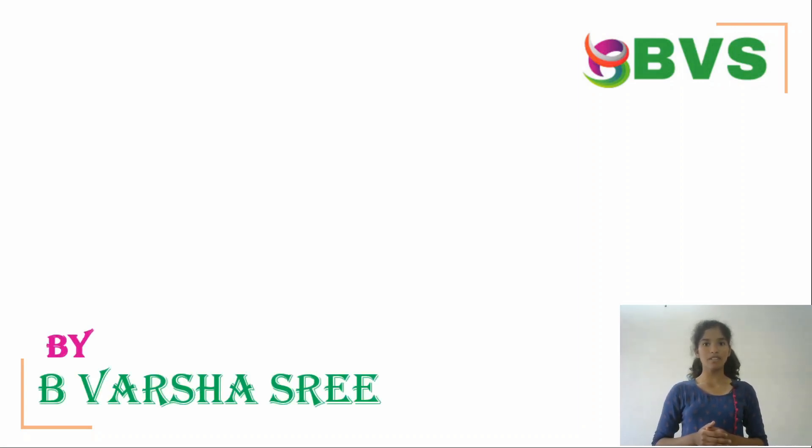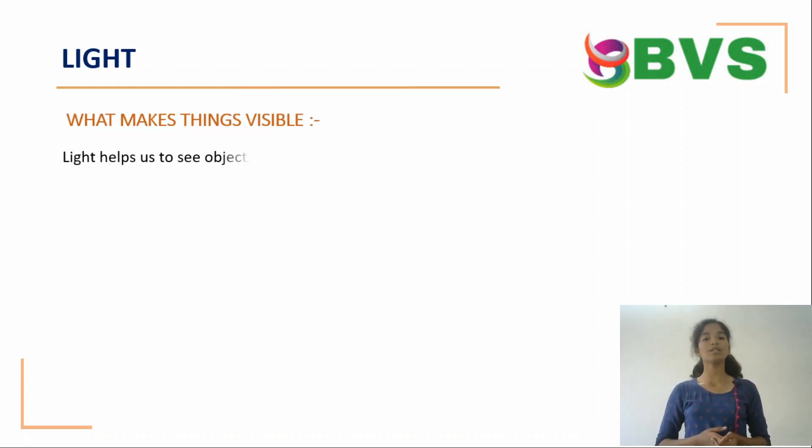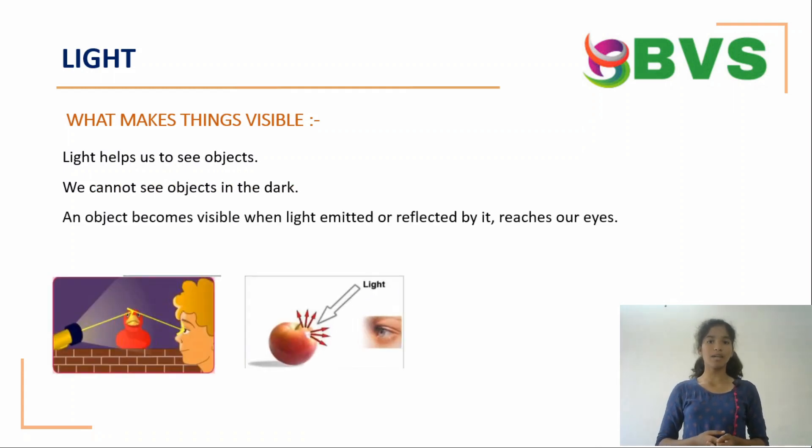Hi, my name is B. Varsushvi. Now, let us discuss about light. What makes things visible? Light helps us to see objects. We cannot see objects in the dark. An object becomes visible when light emitted or reflected by it reaches our eyes.